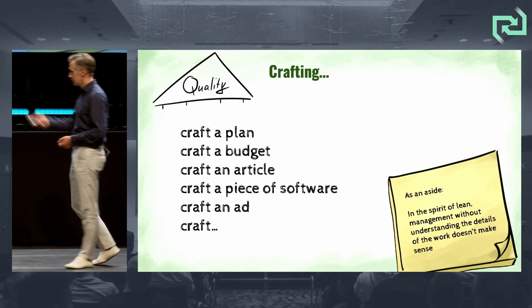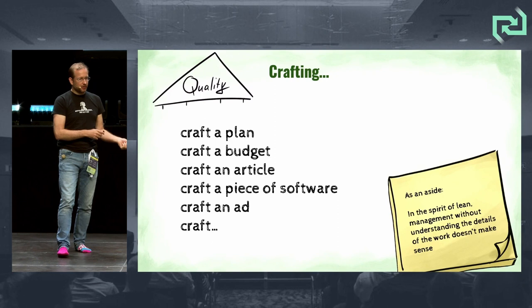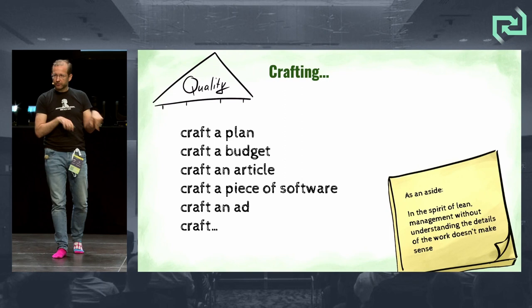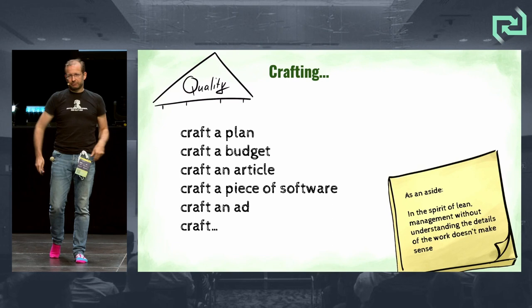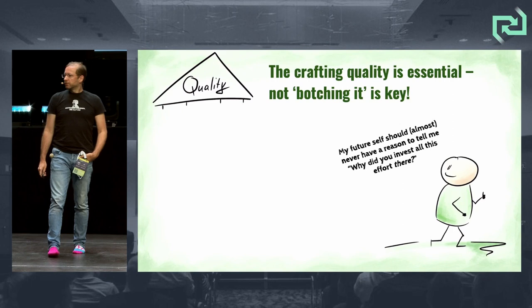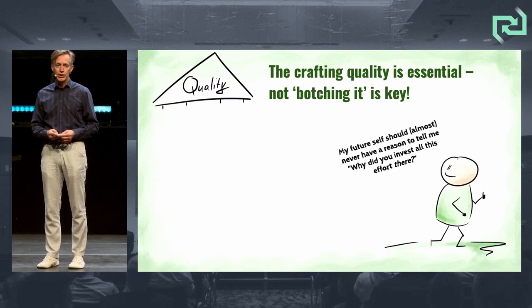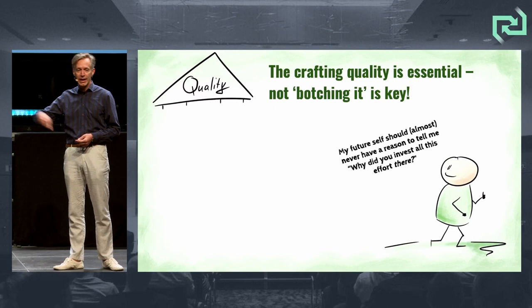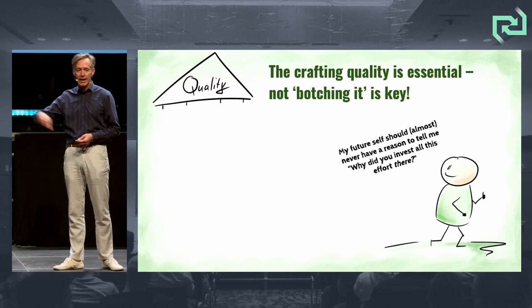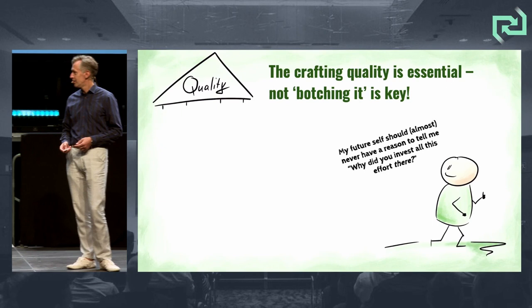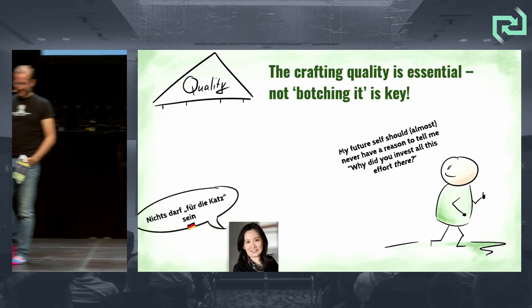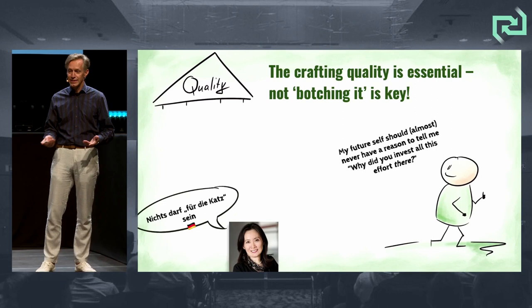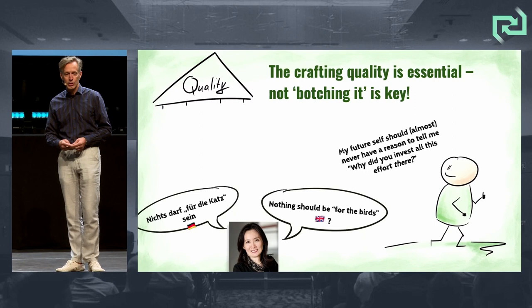Be really good at what you do. If you're a manager or leader, you have to understand what that stuff is about — not just look from the outside, but understand the inner workings. Quality means my future self should never tell me 'why did you do it that way?' In German the book uses 'nichts soll für die Katze sein' — in English: nothing should be for the birds. And that brings us to lead time — it's not about buying low and selling high; in the Lean sense it's about the stuff in between: taking what we have and creating things from it.